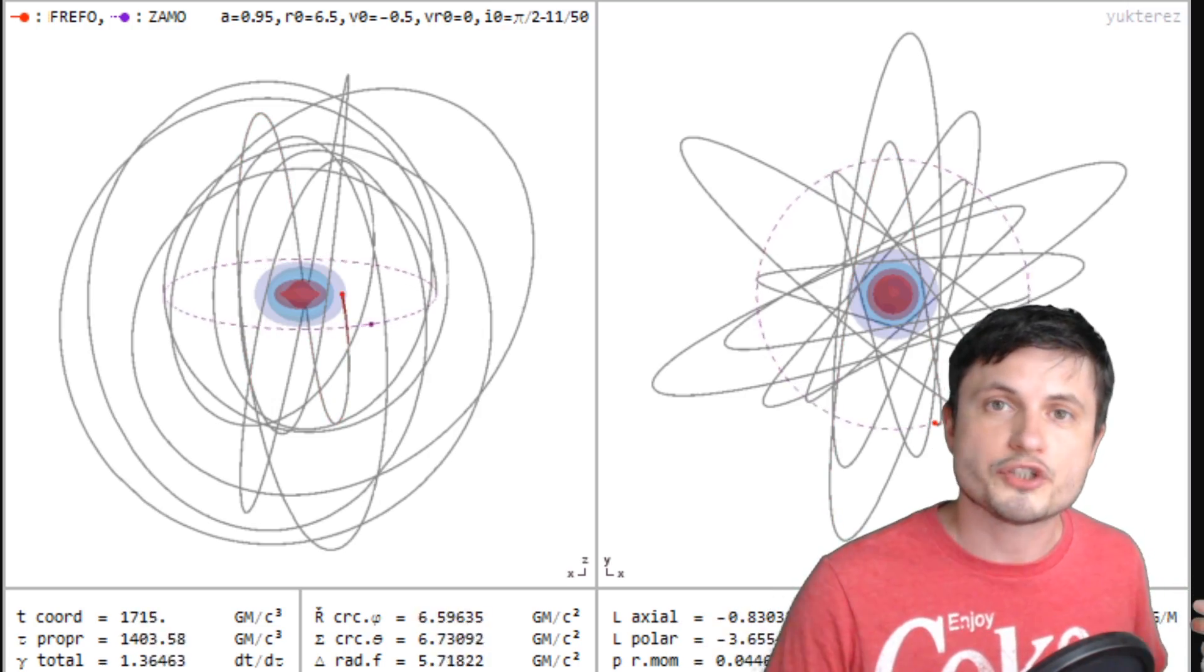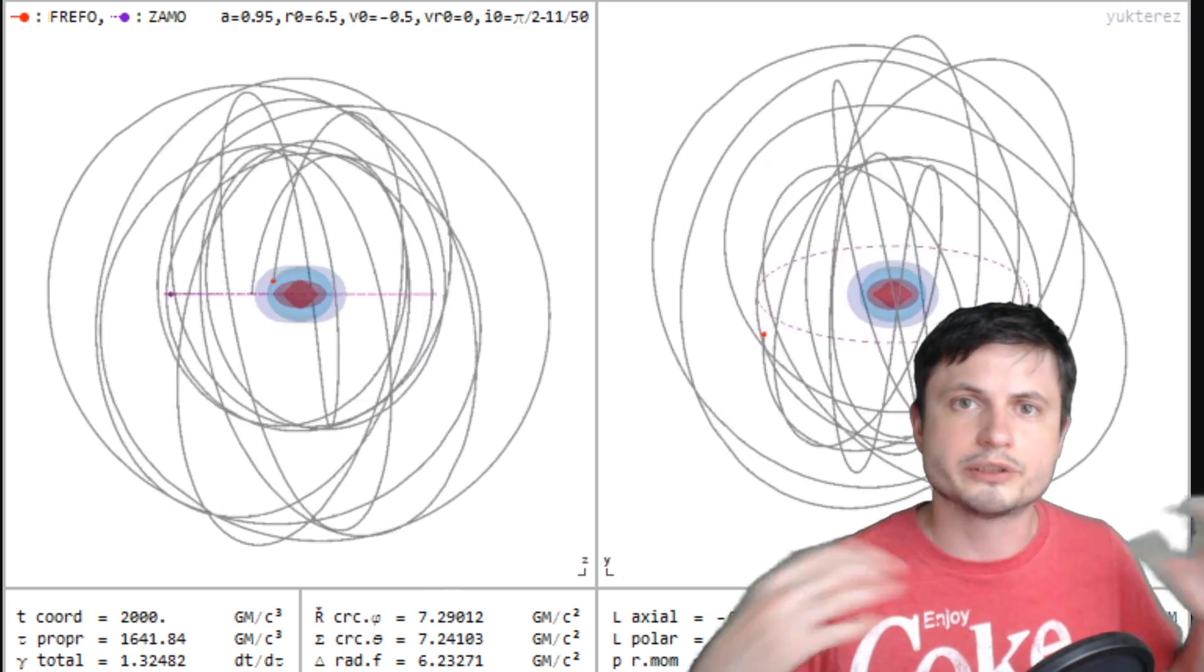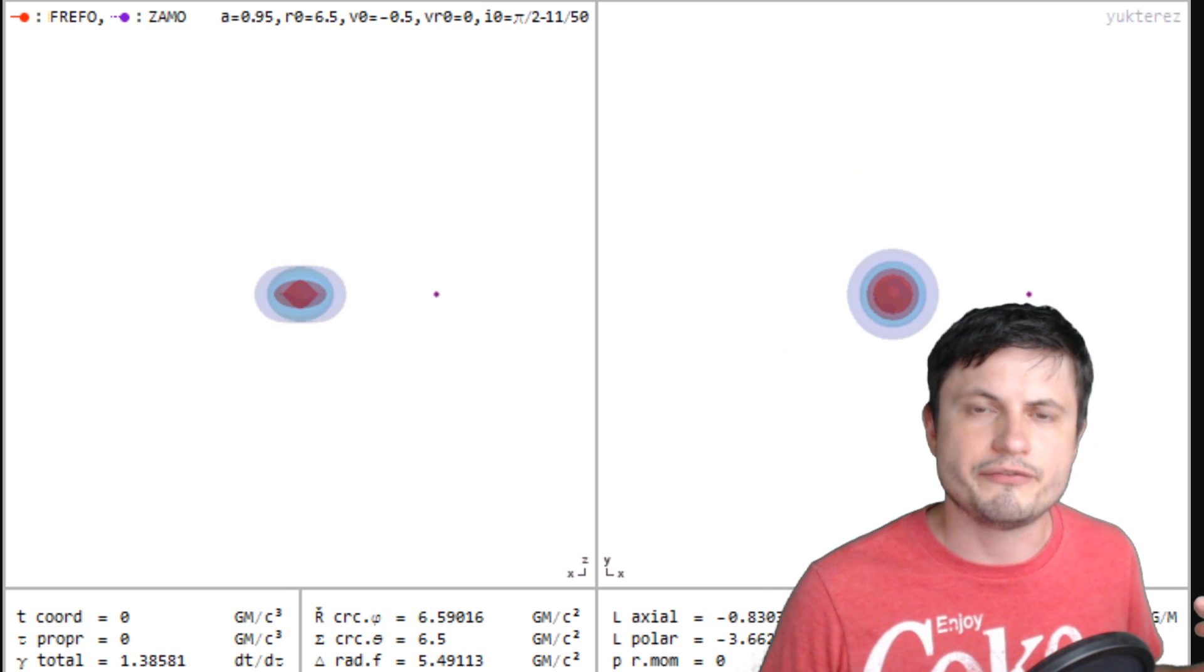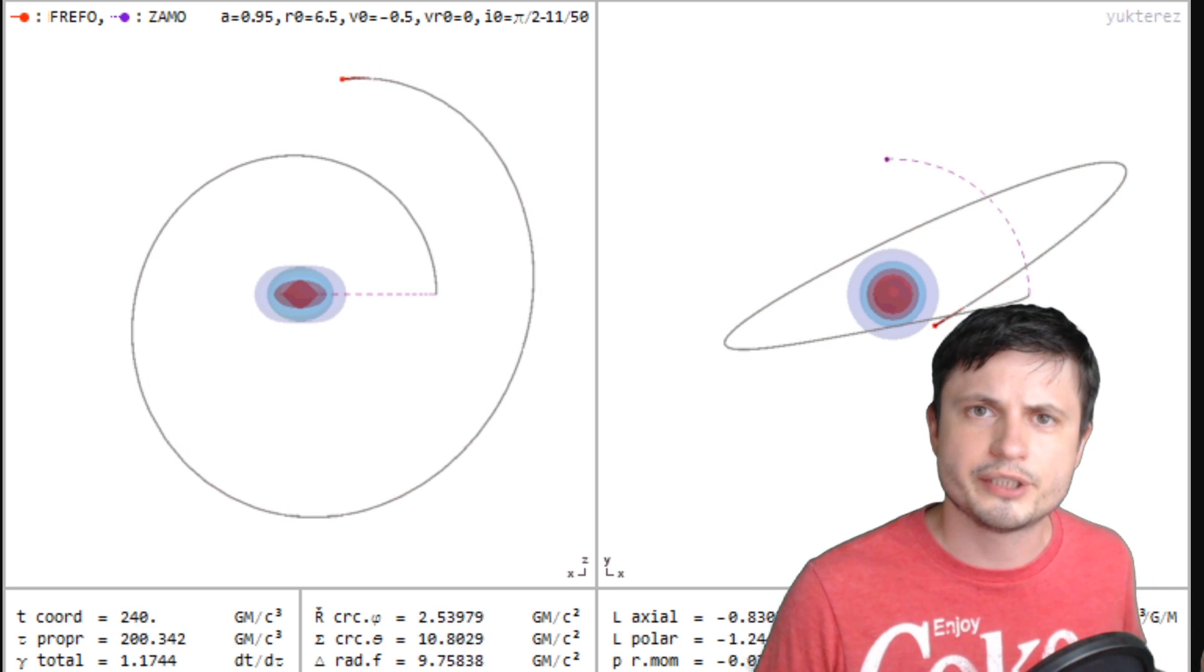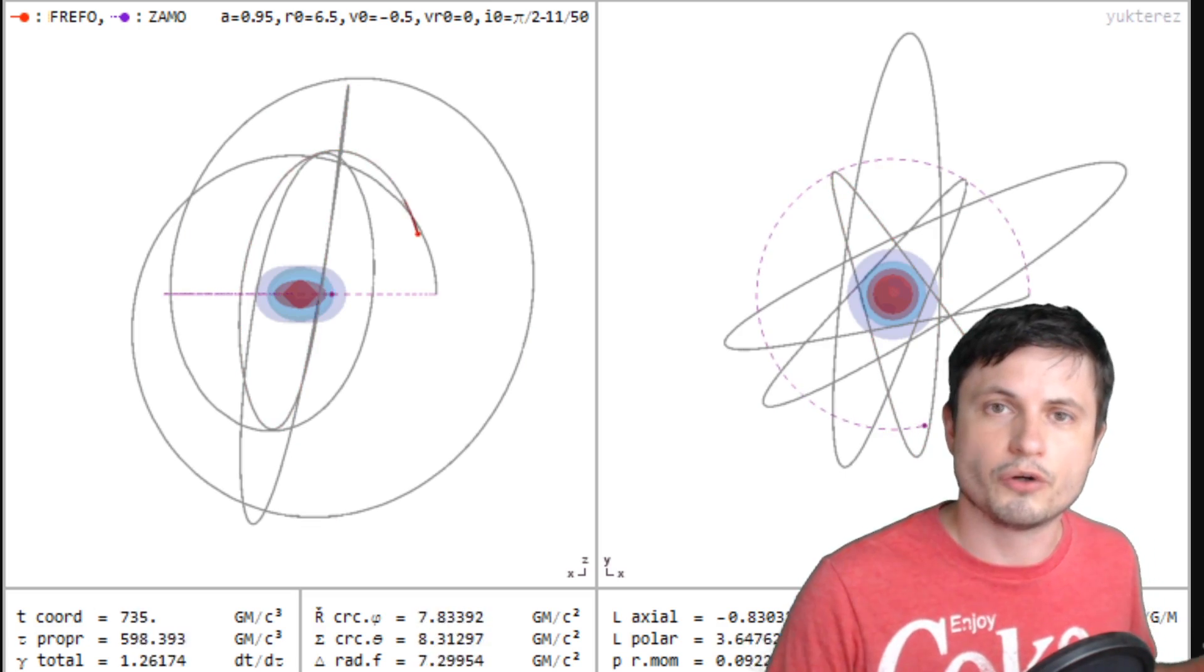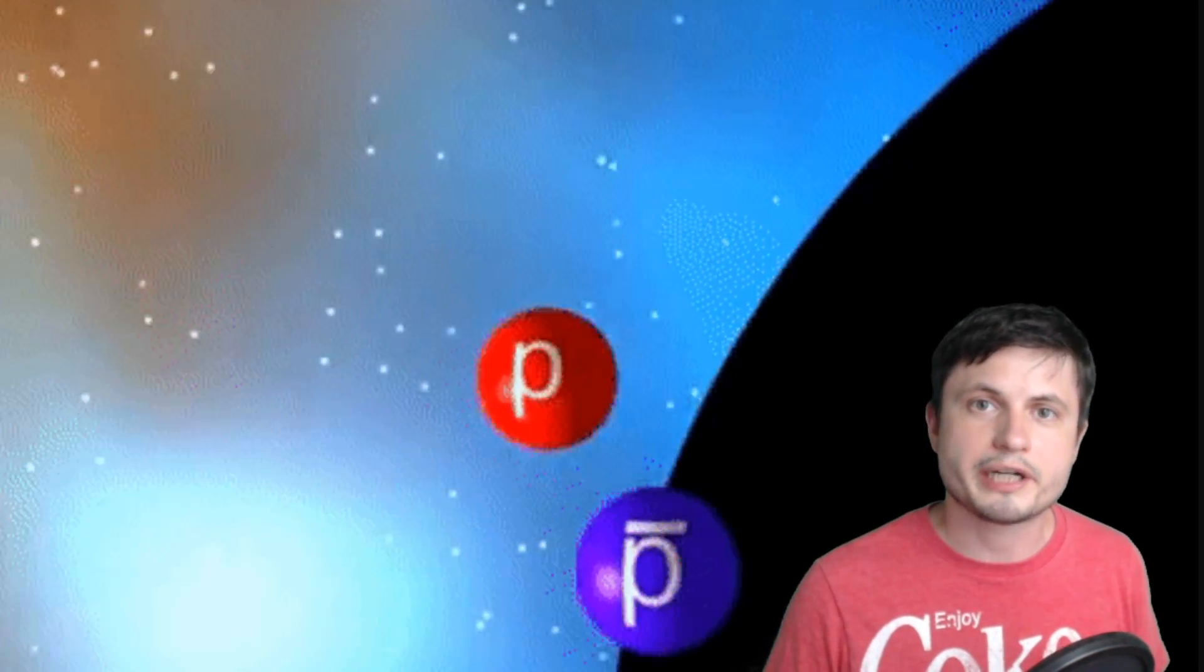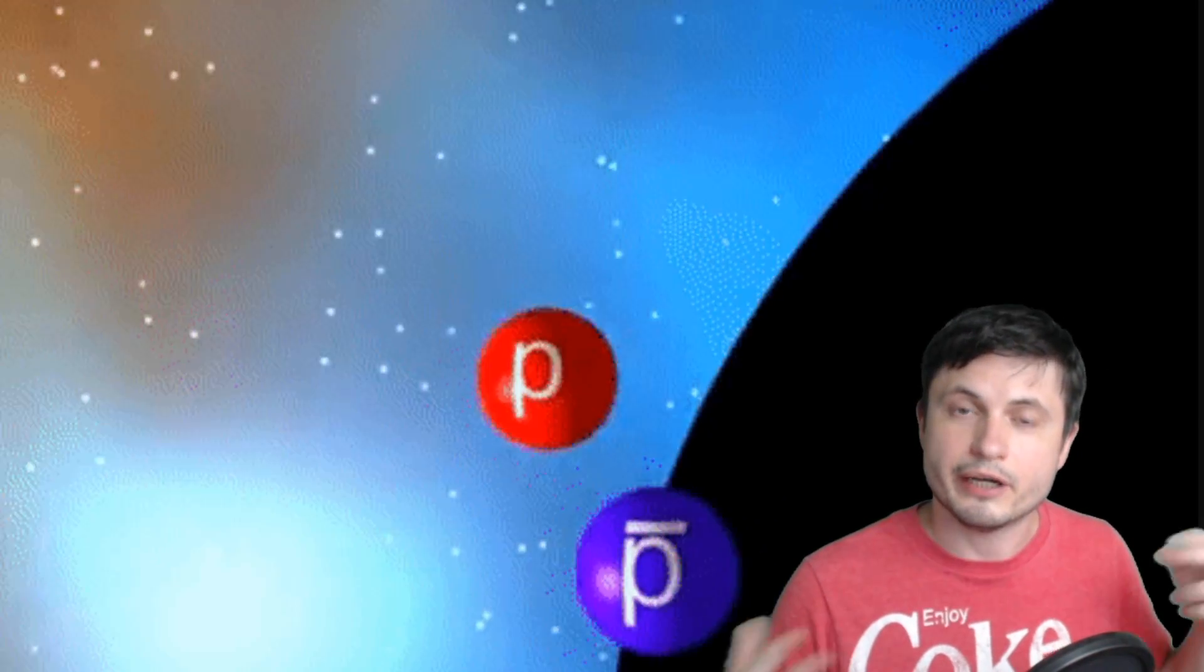We're discovering so much more about the universe, about energy, about physics, and about the world around us by just studying these very unusual theoretical objects that we never really thought about. And by the way, because of the propositions from Penrose and from Zeldovich, only a few years later, in 1974, Stephen Hawking was able to show that black holes can thus lose mass and evaporate.